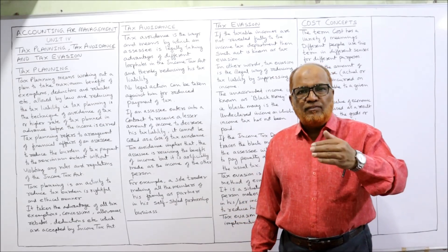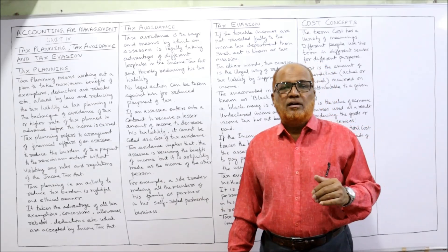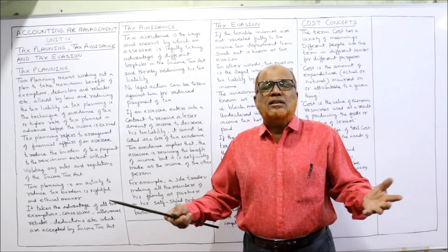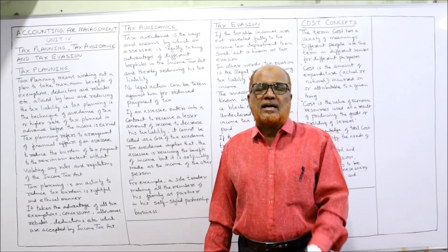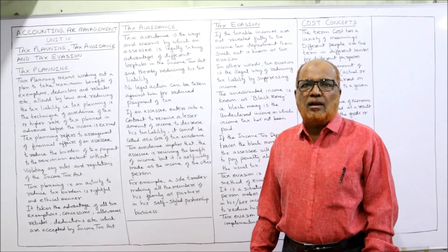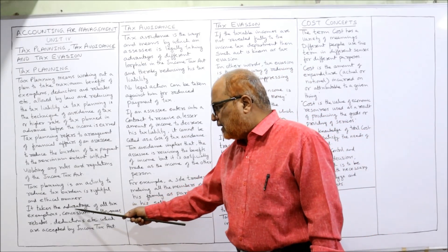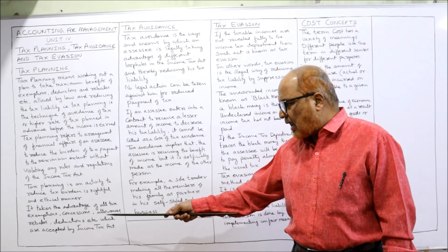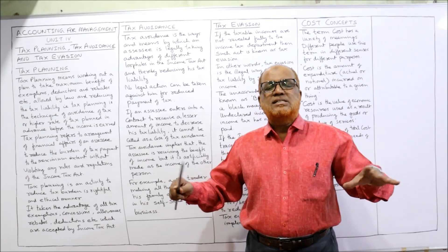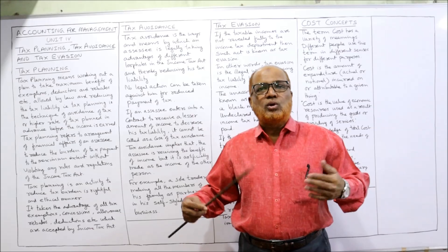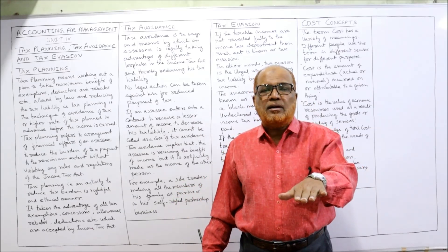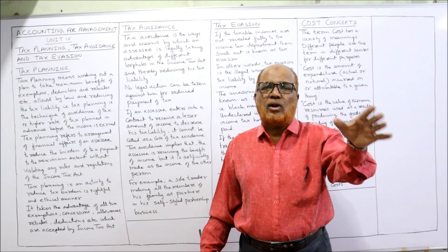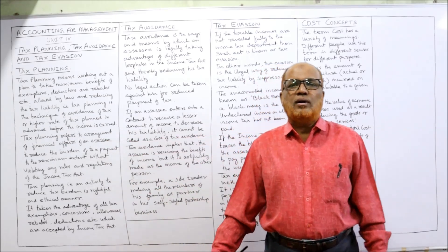Tax planning is an activity to reduce the tax burden in a rightful and ethical manner — it is not illegal. The law itself has given the benefit that you can reduce the tax liability by taking the advantage of exemptions, concessions, allowances, rebates, and deductions, all of which are accepted by the Income Tax Act. This plan of reducing tax liability by taking advantage of all exemptions and deductions is called tax planning.